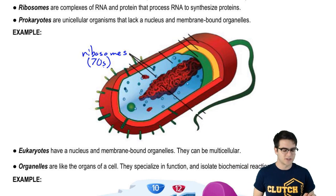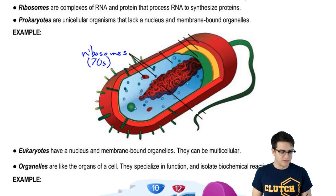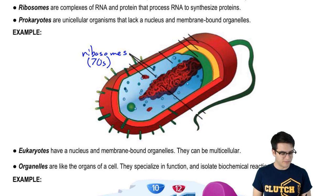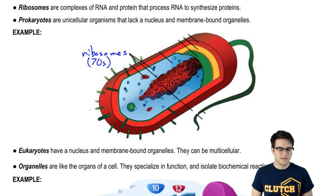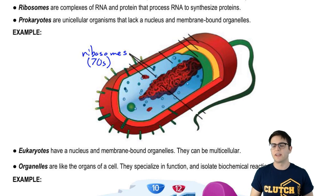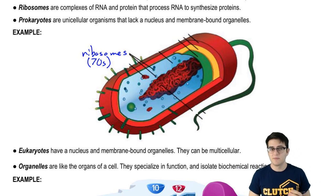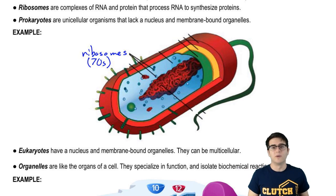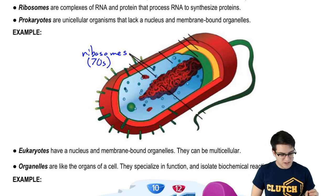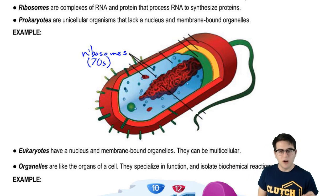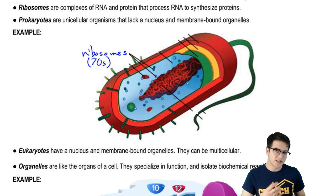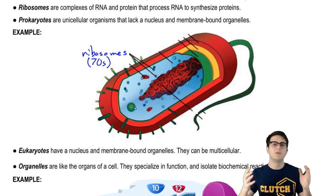The defining feature of prokaryotes that their name points to is the fact that they lack a nucleus. In Greek, karyon means kernel. Early on in biology, when scientists were discovering and looking at cells, they noticed that some cells had a dense region in the center, which they called the kernel or the nucleus. So prokaryotes don't have a nucleus — pro means before. These are some of the oldest life forms on Earth, and prokaryotes really just means "before nucleus" — these cells arose before the nucleus.